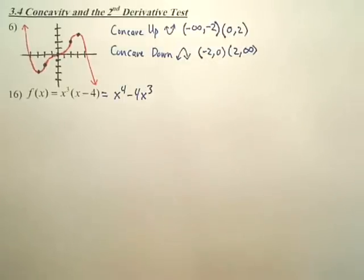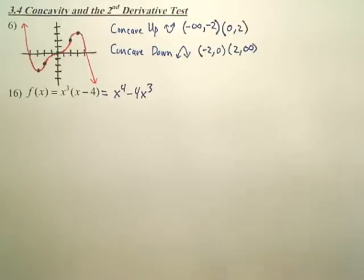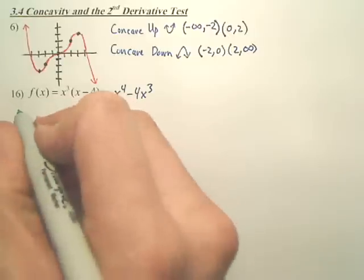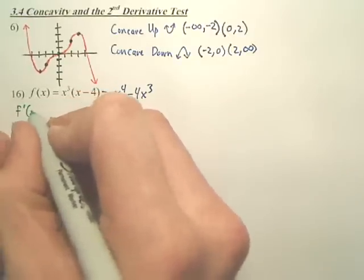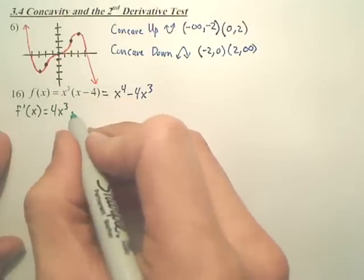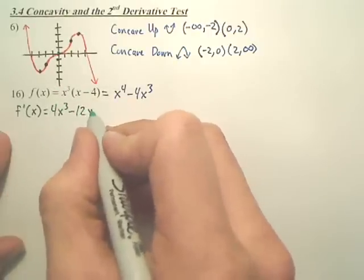Good idea? Okay. So, our first derivative is 4x³ minus 12x².